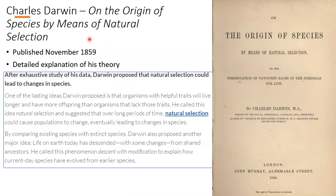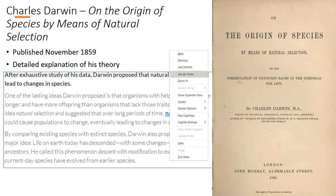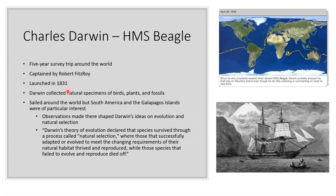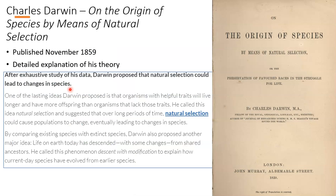Charles Darwin wrote a book called On the Origin of Species by Means of Natural Selection — here's the cover of one of the original prints. It was published in November 1859 and gave a detailed explanation of his theory. He made his trip in 1831, it took five years so he got home in 1836, and he didn't publish his book until 1859. So it took him a while to look at all the evidence he collected, formulate the theory, and write the book. Science takes time.